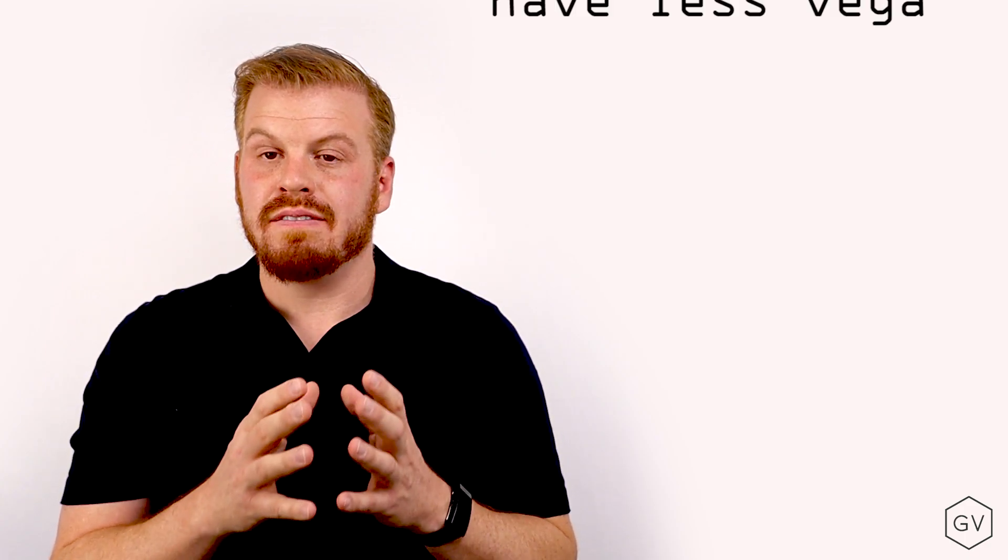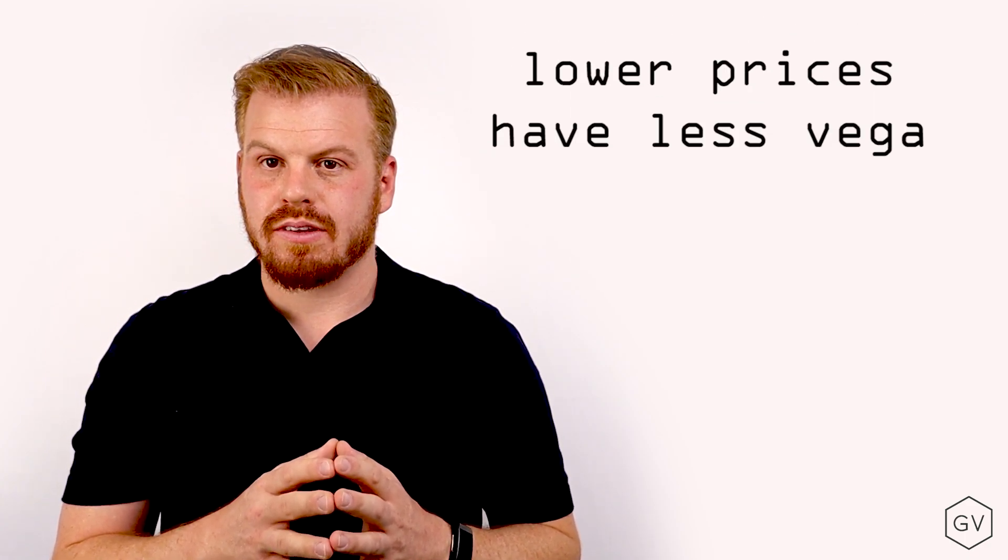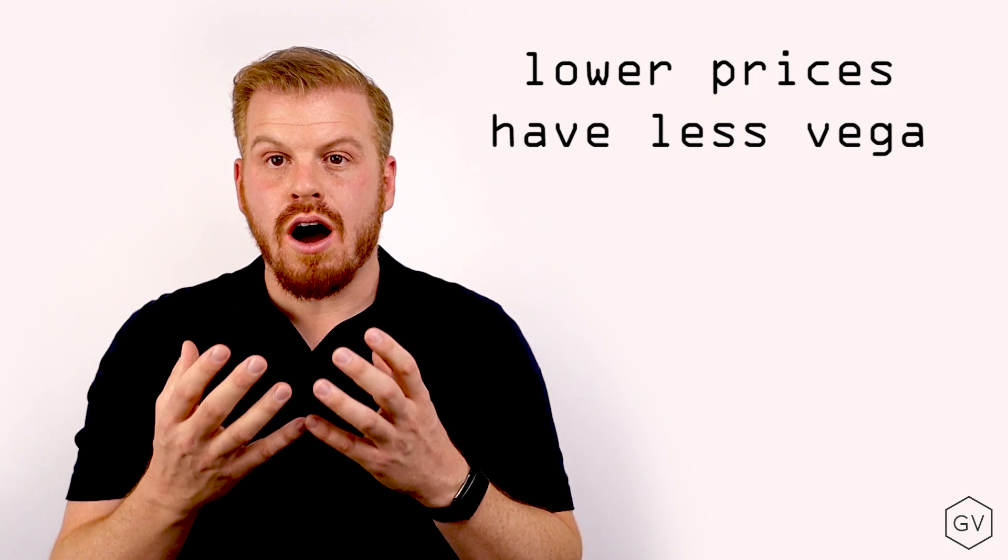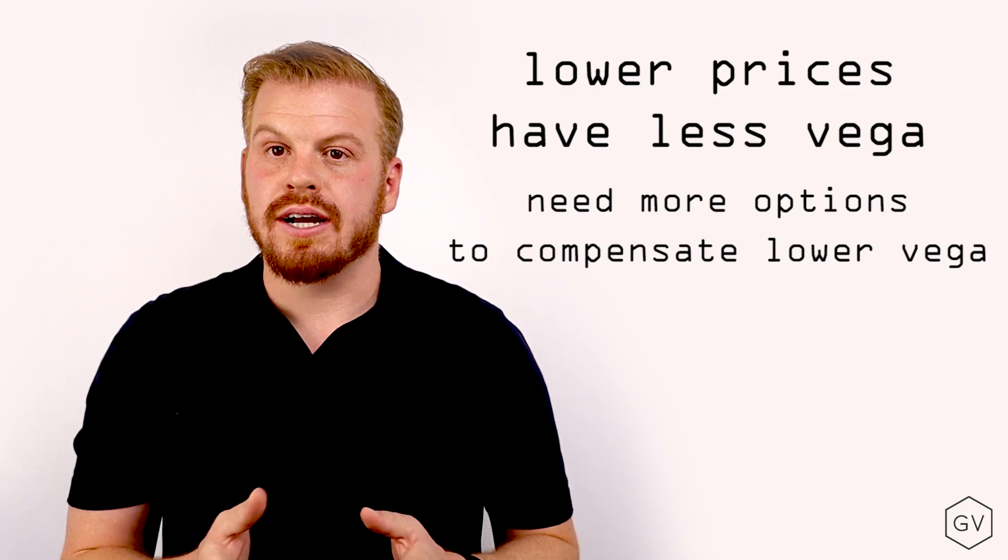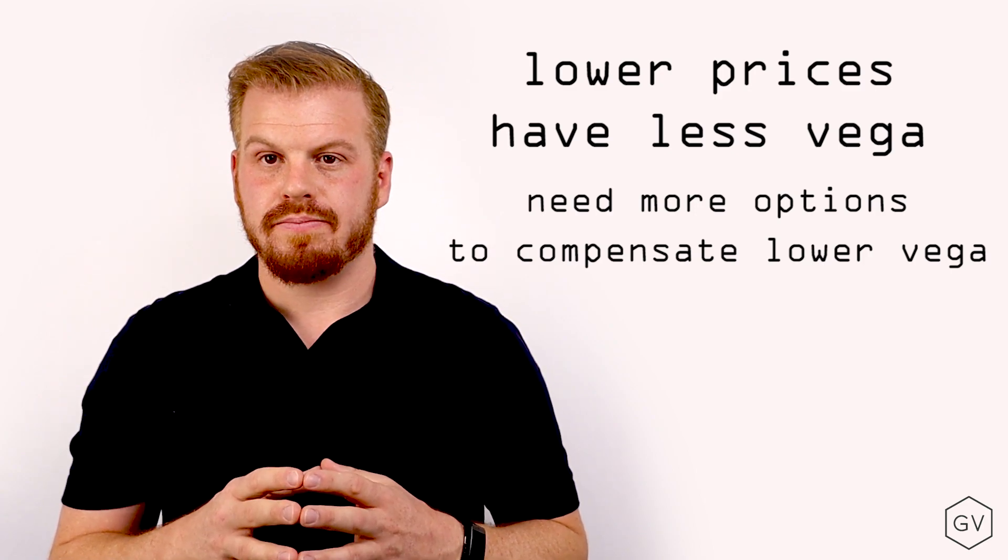What is the Vega exposure compared to an option that's at the money, but the underlying is $1,000. There's a lot more Vega exposure if the underlying is $1,000 and we're talking about an at the money option versus an at the money option of the underlying at $10. Therefore, options with lower strikes have a higher weighting to them. And options with higher strikes have a lower weighting to them.